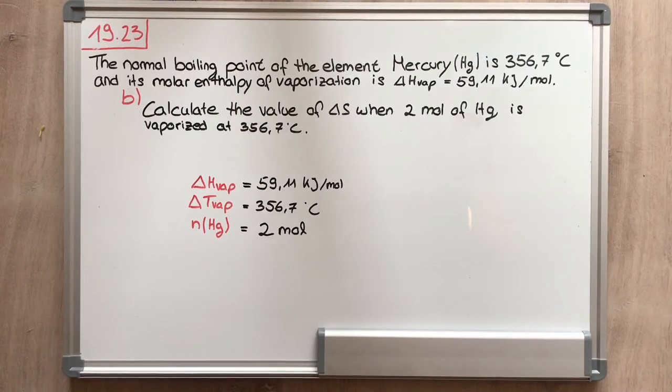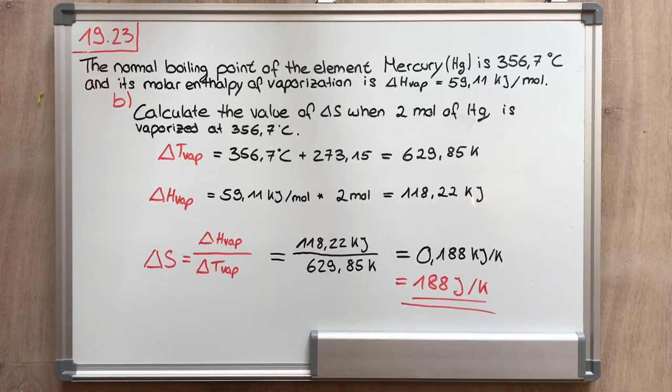For the second question, we must sum up the given information. We got the entropy of vaporization, which is 59.11 kilojoule per mole. The temperature of vaporization, which is 356.7 degrees Celsius. And the molar amount of mercury, which is 2 mol. Now we need some calculations.